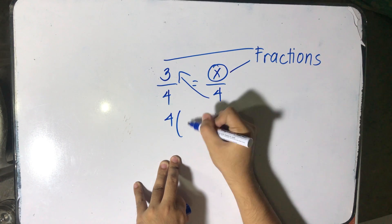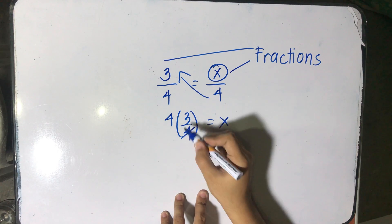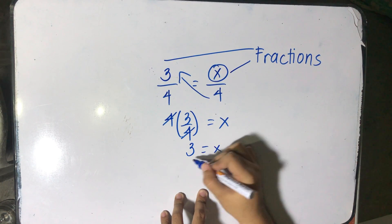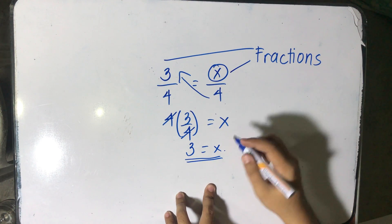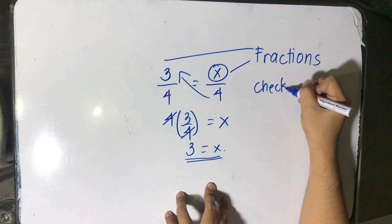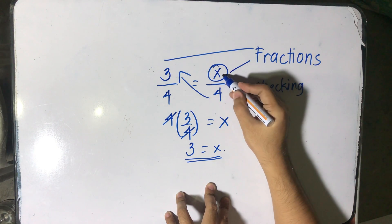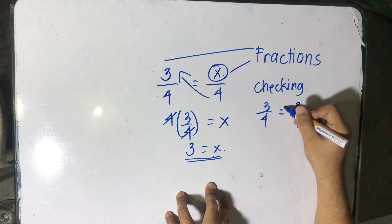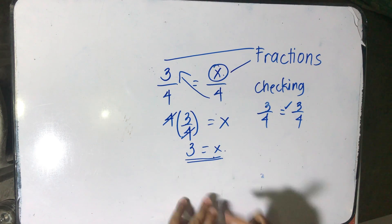If I cross multiply 4, this becomes 4 times 3 over 4, which is equal to x. For checking, substitute the value of x back into the equation: 3 over 4 is equal to 3 over 4. Therefore, x equals 3 is a solution.